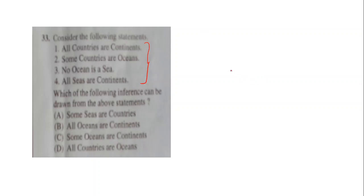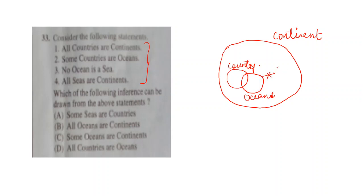So let's solve this together. All countries are continents. Let's draw this. This is the circle for countries. Let's draw for continents. A big circle I have to draw. So this is continent. Now they are saying some countries are oceans. So this is country. We will draw here. Some countries, this is the circle for oceans. Now they are saying no ocean is a sea. So there is no relation between ocean and sea. And they are saying all sea are continents. You have to draw this inside this. That is why they are saying all sea is continent. It is coming inside the circle of continent. So you have drawn the picture of these statements.